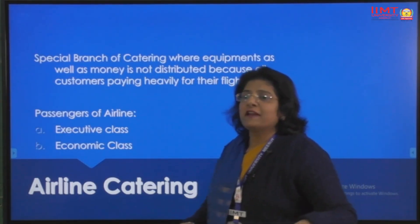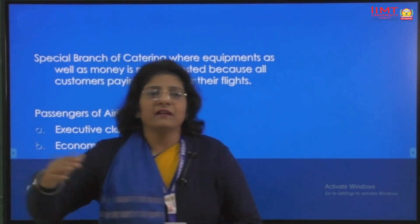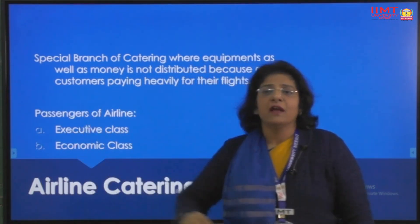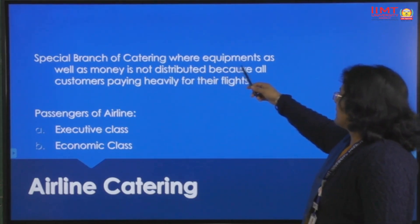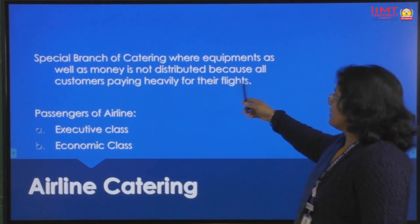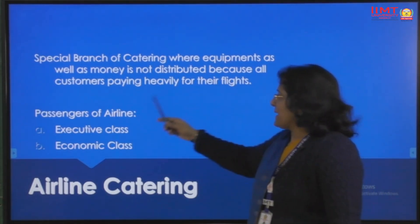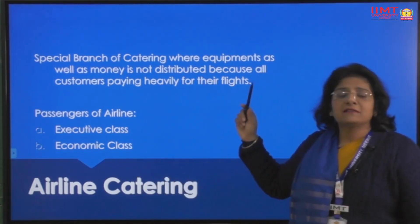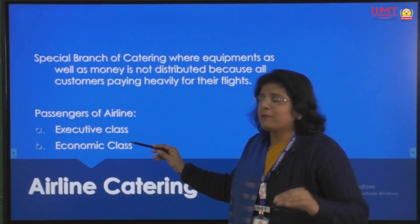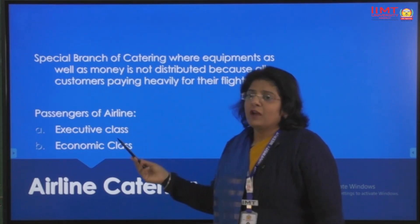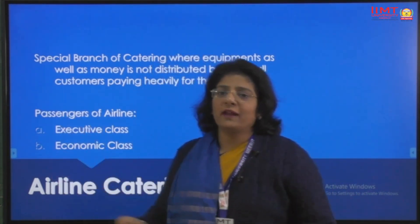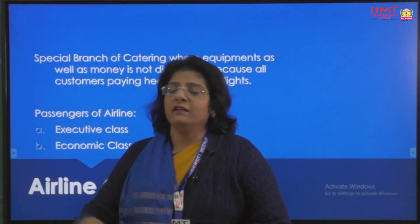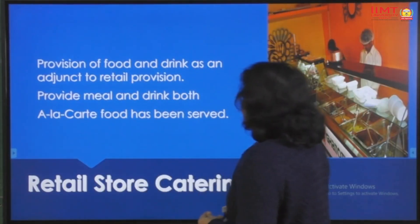Airline catering is now very common as more people travel by air. During the air journey, passengers can have a meal. It is a special branch of catering. Passengers pay heavily for their flights. Airlines have two classes: economy class with cheaper tickets and executive class with more expensive tickets. Either food is included with the ticket, or passengers can buy food on board from a choice menu during the flight.